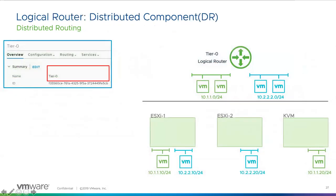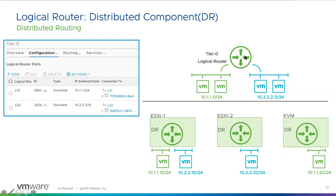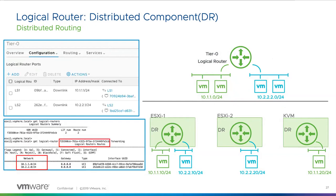Here is a combo view of the user interface and how we'd actually build this out in a model — connecting logical switches into the tier zero. We push that distributed router down to the hypervisors so it's fully distributed to all of them, creating the same construct on each host. Then we share the routes between all hosts so they all know where to go. Traffic can connect from one host to another via the overlay directly, without having to traverse an external router.